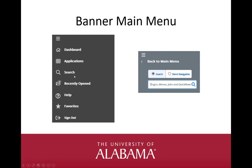The third menu item on the Banner main menu is Search, which is the same as the search box on the Welcome or Home page. There are two options for Search. The first is Search, which brings up suggestions after entering the first three characters and tries to autofill your answer, looking for those characters in the page acronym or page name. Direct Navigation requires that the exact page name or acronym must be entered, and Banner does not try to give suggestions or complete the search until you have finished entering your selection.